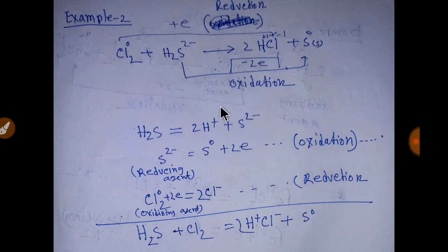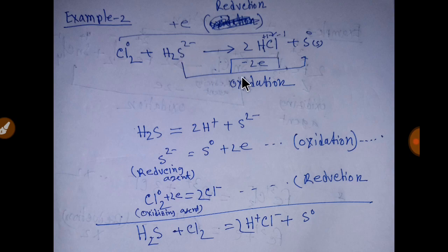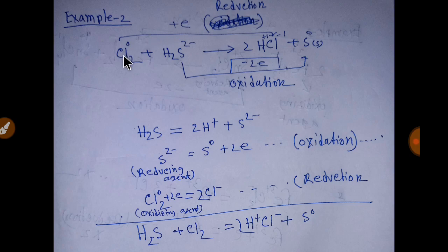This is our second example. The oxidation state of chlorine here is zero, and in hydrogen sulfide the oxidation state of sulfide is 2−. After reacting, chlorine becomes −1 and sulfide becomes zero. Since the sulfide loses electrons, this is an oxidation process. Since chlorine gains electrons going to chloride, this is a reduction process, and chlorine is the oxidizing agent.